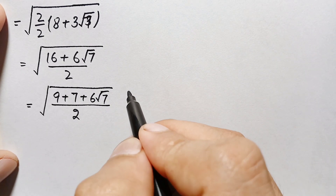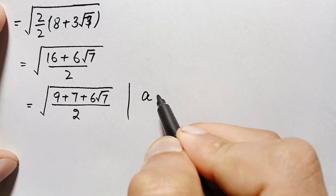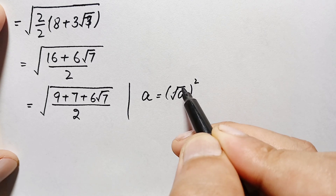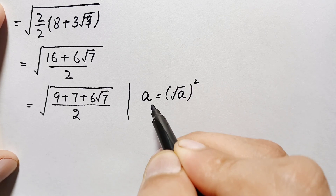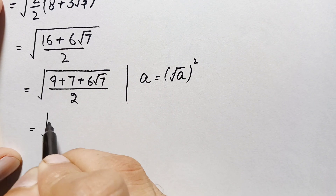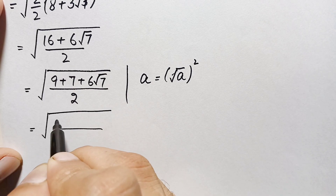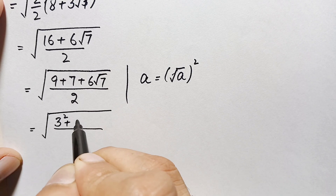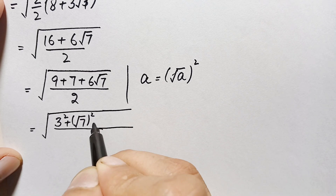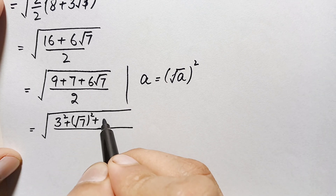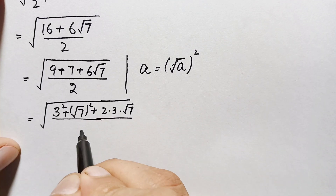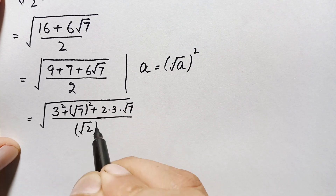We know that any number a can be written as (√a)². Using this, we write 9 as 3², and 7 as (√7)². We also write the middle term 6√7 as 2 times 3 times √7, where 2 can be written as (√2)².